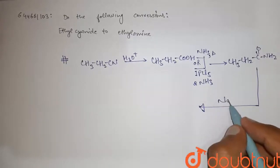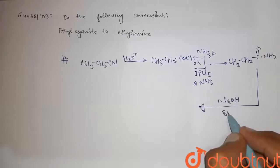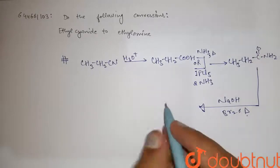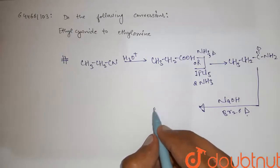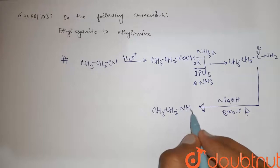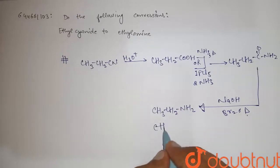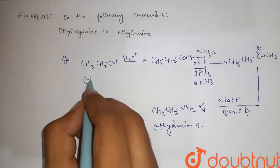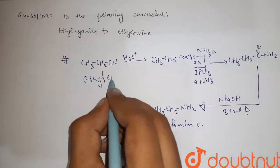After treating it with NaOH, Br2, and heat, we get ethylamine: CH3-CH2-NH2. This is ethylamine from ethyl cyanide.